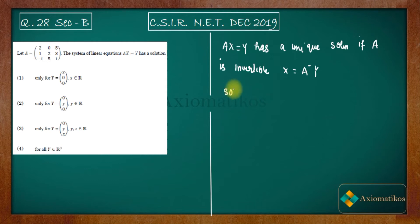Here, the matrix A is [[2, 0, 5], [1, 2, 3], [-1, 5, 1]]. Let us calculate the determinant of this matrix.